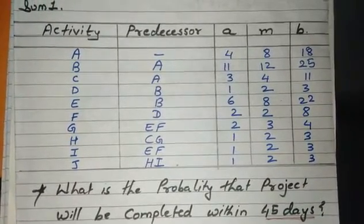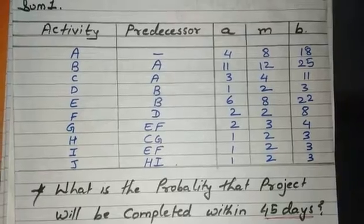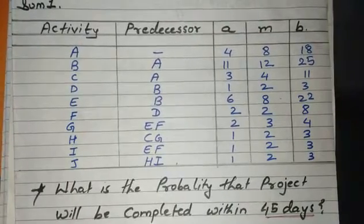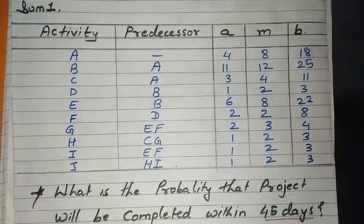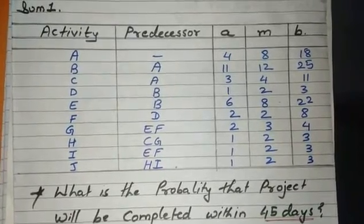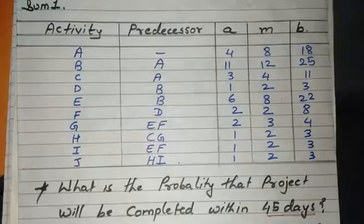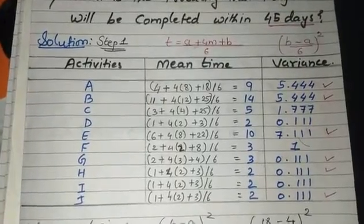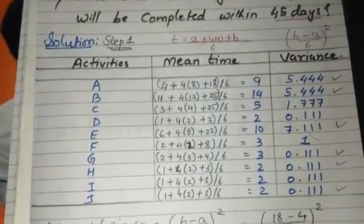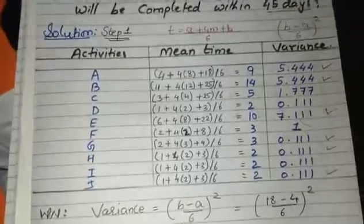Now all three times are given but we cannot draw the network and assign the time directly because these three times are pessimistic, most likely, and optimistic time. So we have to find out the mean time using the formula: a + 4m + b divided by 6, and we get the mean time.